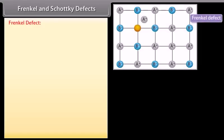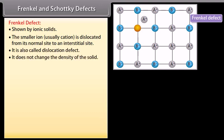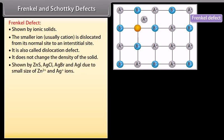Frenkel and Schottky defects. Frenkel defect is shown by ionic solids. The smaller ion, usually cation, is dislocated from its normal site to an interstitial site. It is also called dislocation defect. It does not change the density of the solid. Shown by ZnS, AgCl, AgBr, and AgI due to small size of Zn2+ and Ag+ ions.